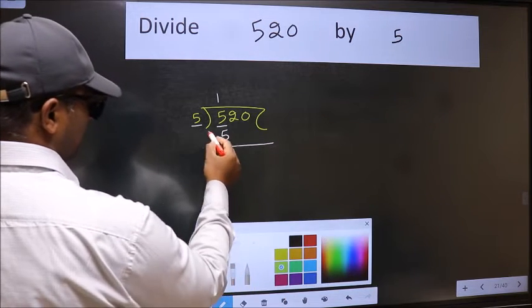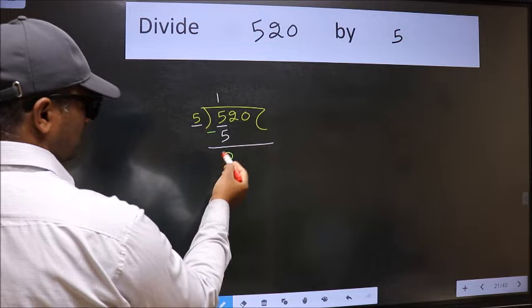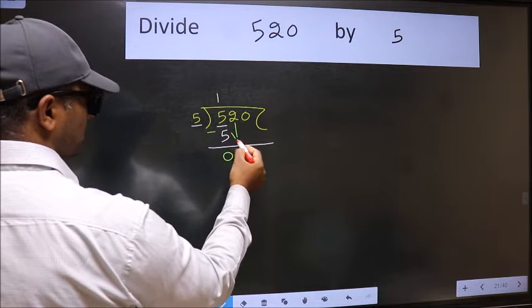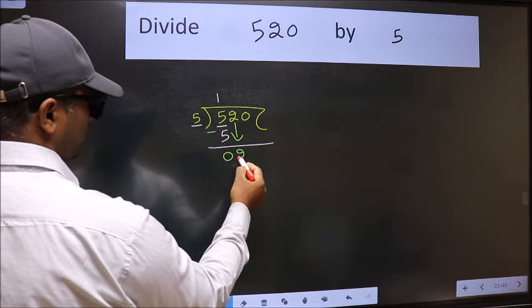Now we should subtract. We get 0. After this, bring down the beside number. So 2 down.